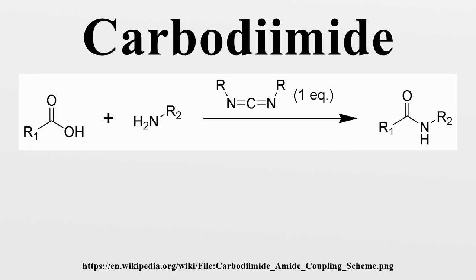The O-acylisourea 2 can react with an additional carboxylic acid 1 to give an acid anhydride 5, which can react further to give the desired amide 3. The main undesired reaction pathway involves the rearrangement of the O-acylisourea 2 to the stable N-acylurea 6. The use of solvents with low dielectric constants such as dichloromethane or chloroform can minimize this side reaction.